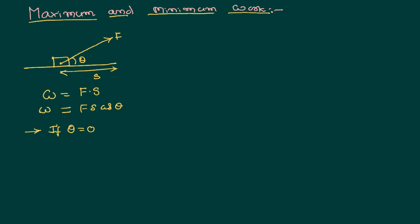Work done can be written as Fs cos 0. We know cos 0 equals 1, that is Fs. This is the maximum possible work done.